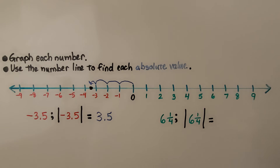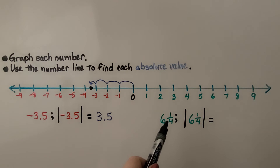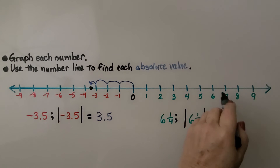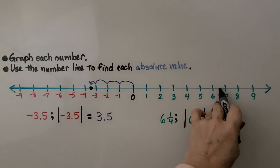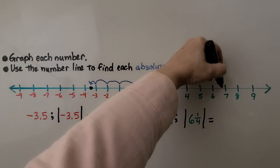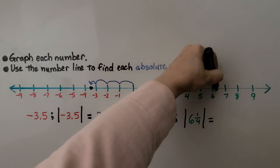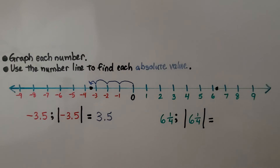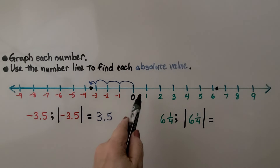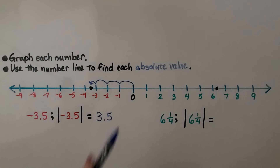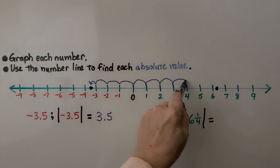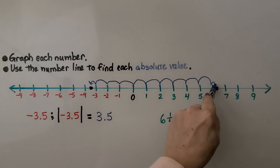Three and five-tenths. Here we have a positive six and one-fourth, so it's going to be farther right than six. One-half is halfway between six and seven, and one-fourth is going to be closer to six. So it's going to be about right here — not halfway, a little closer to six. Its absolute value, counting the jumps: one, two, three, four, five, six, and one-fourth.